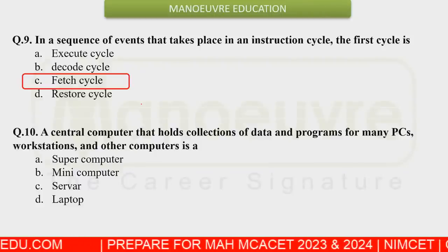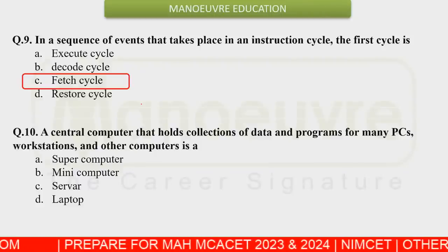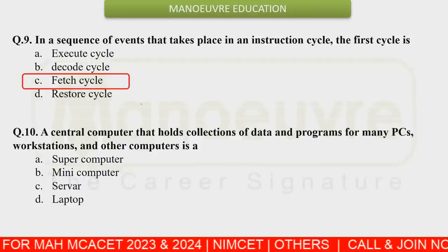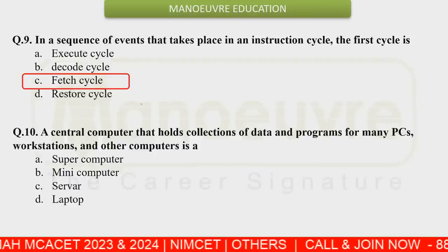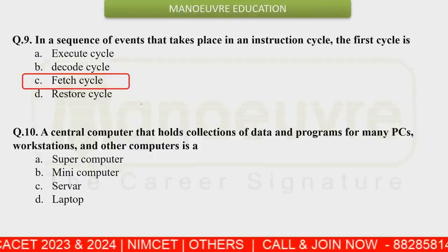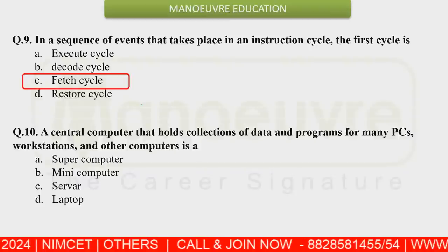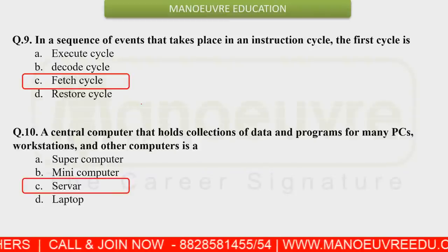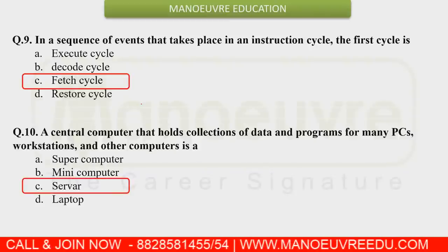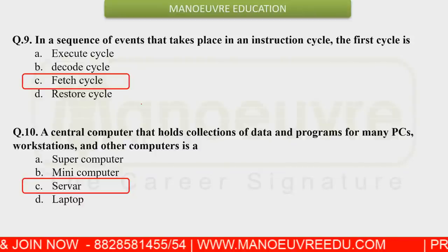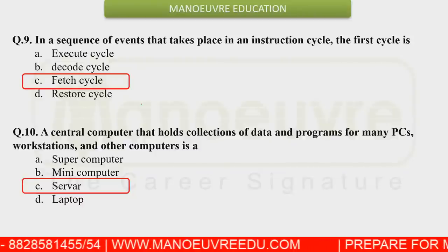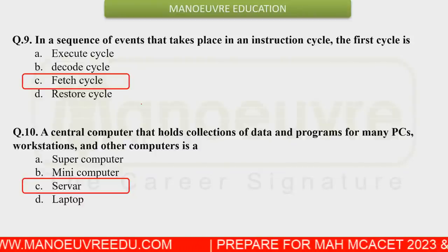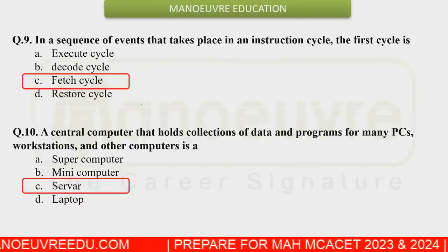There was a question: a central computer that holds a collection of data and programs for many PCs, workstations, and other computers is called what? The answer is a server — a server is the central computer in which all the data is saved and which holds resources for all connected devices.